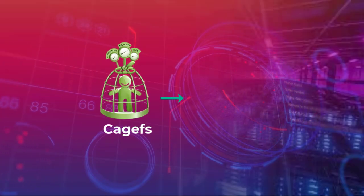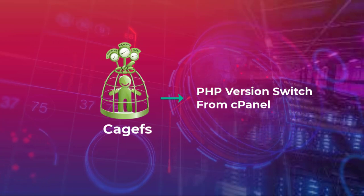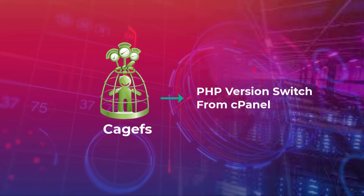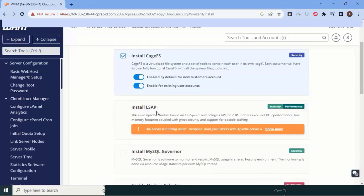The first setting is CageFS. In simple words, CageFS is used for PHP version switching from cPanel. If you want to change the PHP version of a particular website or cPanel account, you use CageFS. It allows each individual user to manage their own file systems and tools. Enable it for all new and existing users by default.